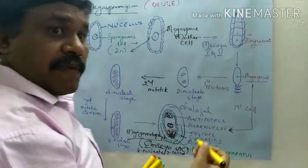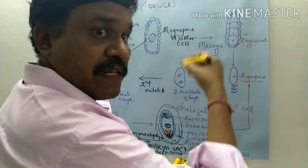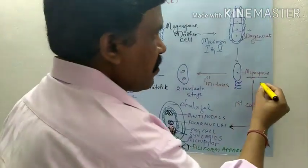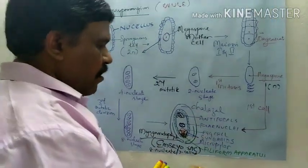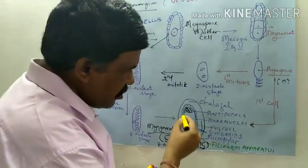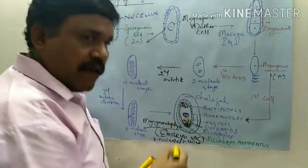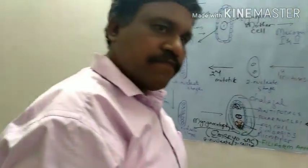What is the ploidy of the Megaspore at the end of meiosis? It is haploid. So all the cells that follow are haploid.